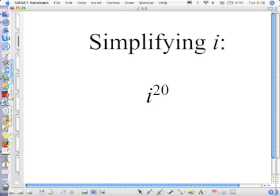If we are simplifying i^20 here, we know that i² specifically is equal to negative 1. So what we want to do is figure out how many i squareds are in i to the 20th. 10, thank you. There are 10, right?